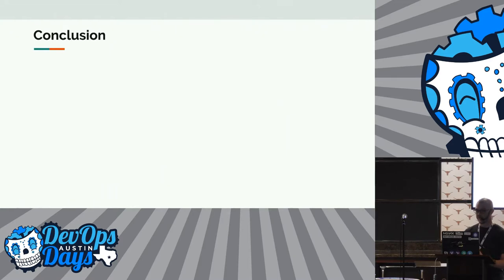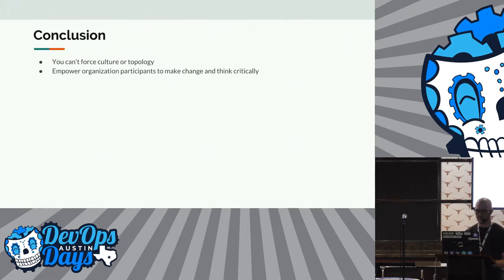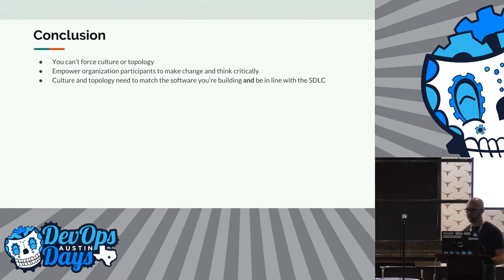My conclusion is that businesses often see themselves as responsible for deciding topology and culture - but really you can't force either of them. Allow engineers to focus on organizational issues just as they would genuine engineering problems. Culture and organizational topologies should be synchronous with software and the SDLC. Make sure your topology lines up with the SDLC, because if your SDLC responsibilities don't say the same thing your topology says, you're going to have massive inefficiencies that cause problems.